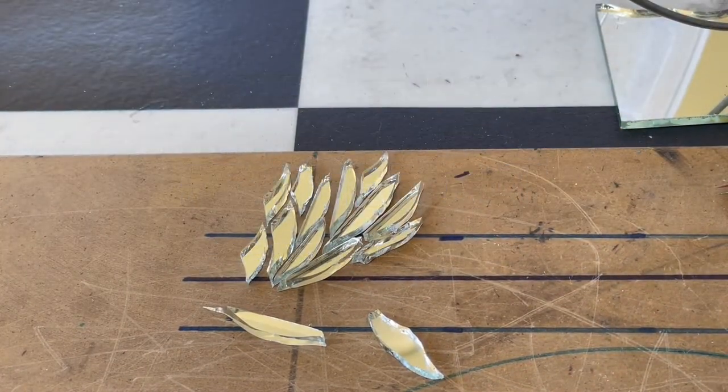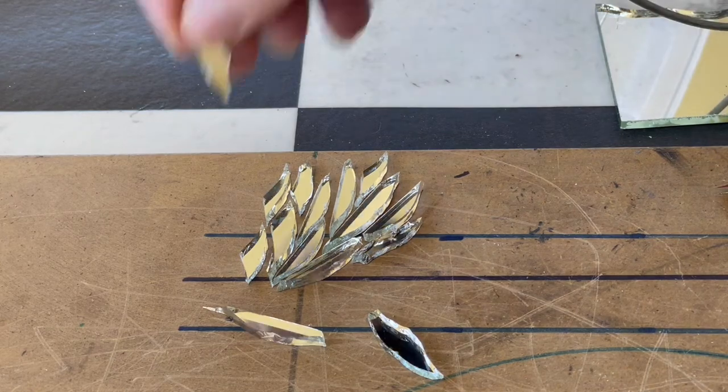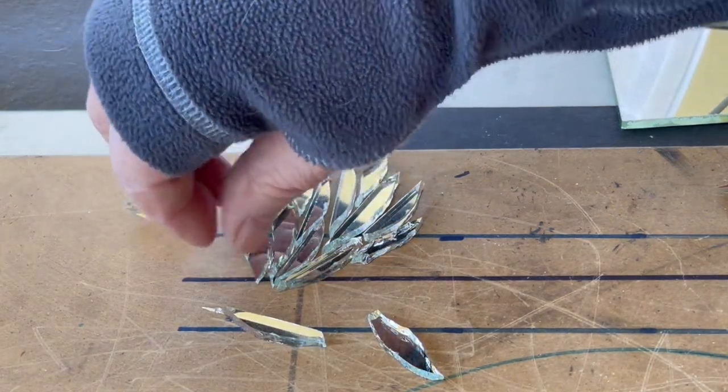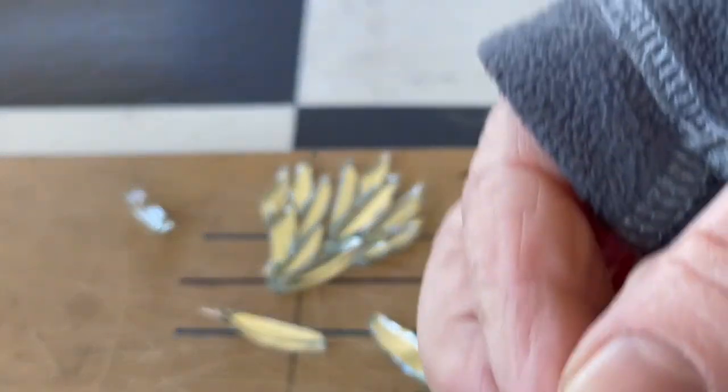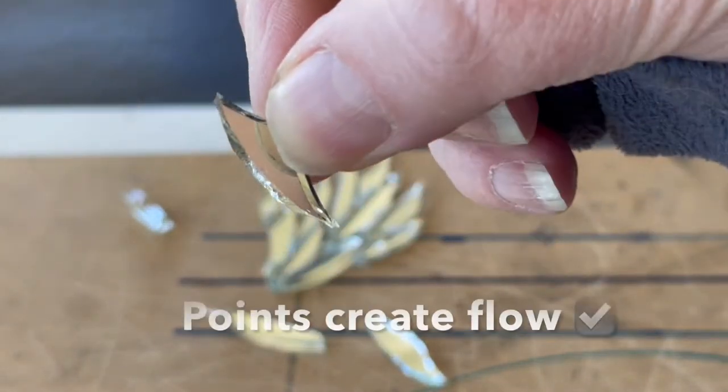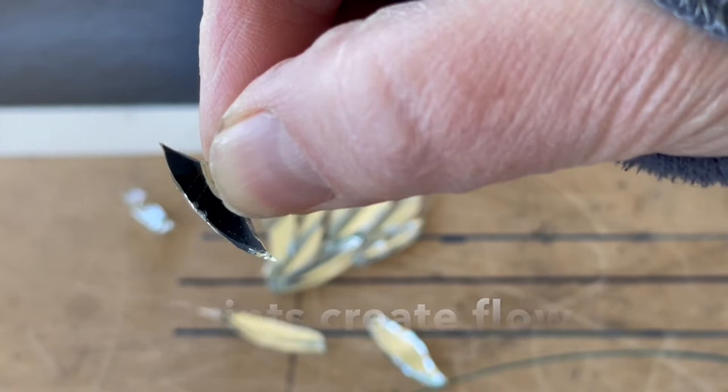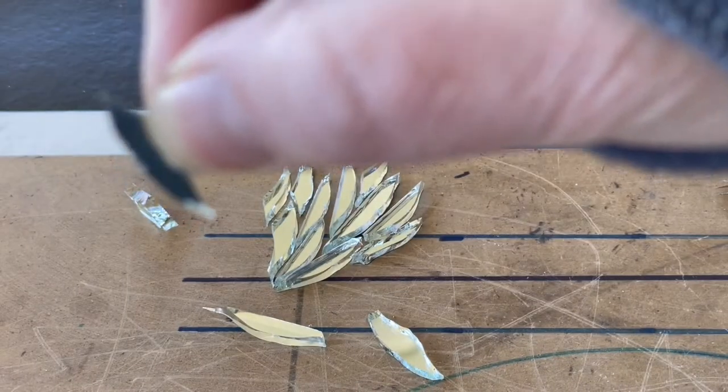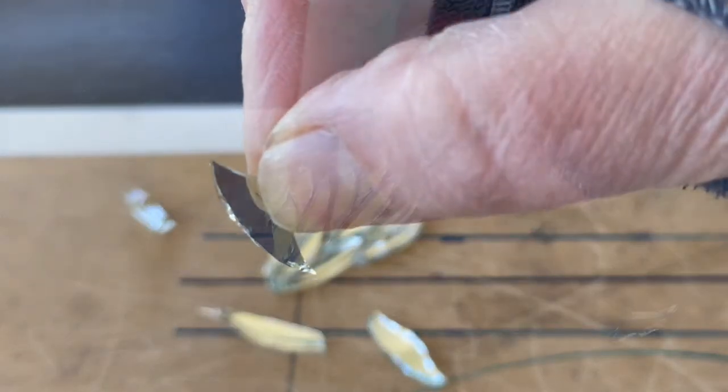The perfect feather cutting has points at both ends. The reason being is that if you don't have points at both ends, it interrupts the flow of your mosaic.